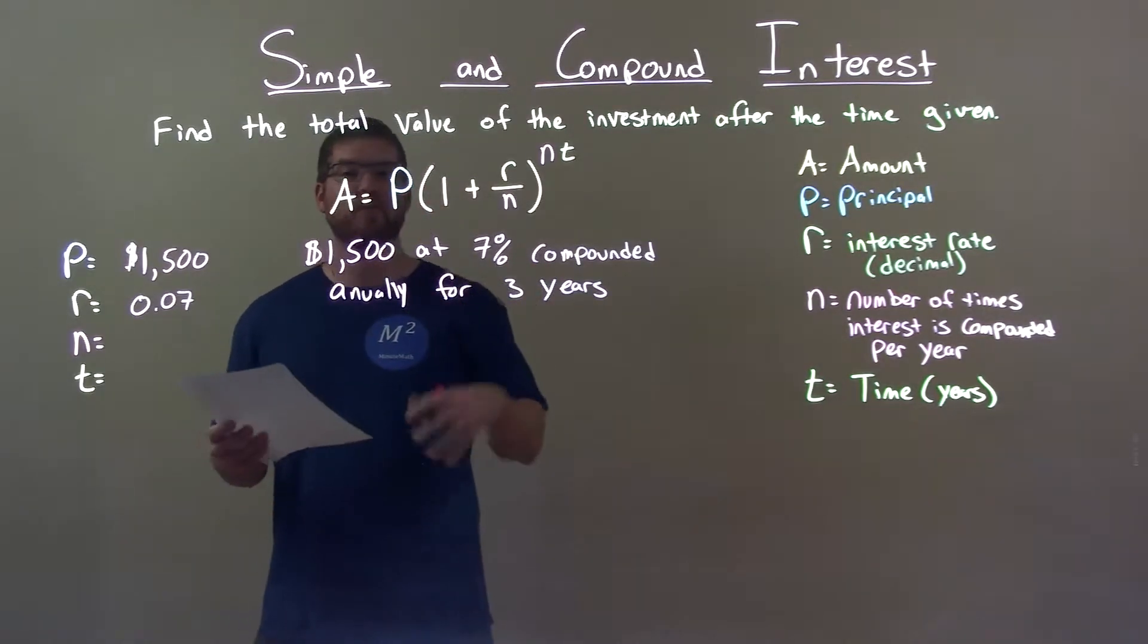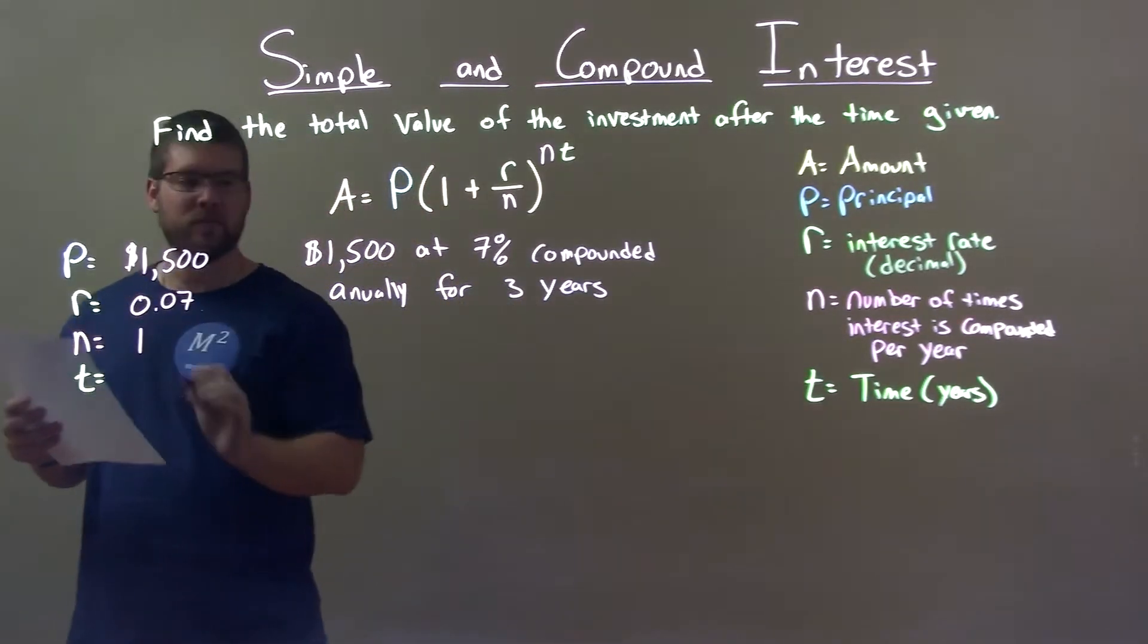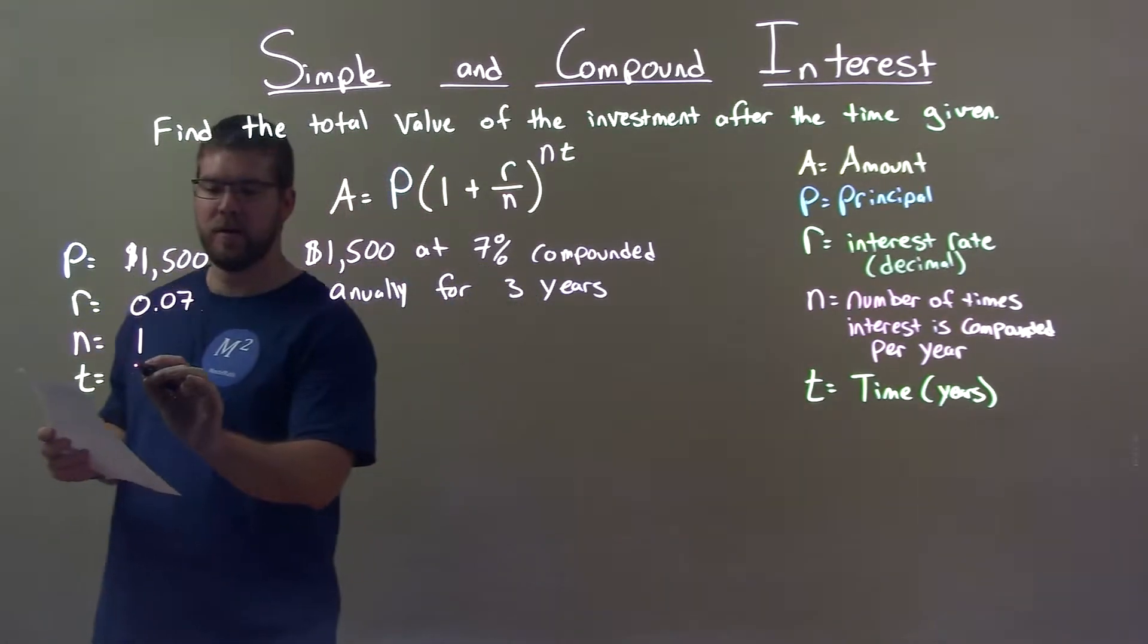Now compounded annually means happens once a year, so our n value is just 1. They tell us this happens for three years, so our time is 3.